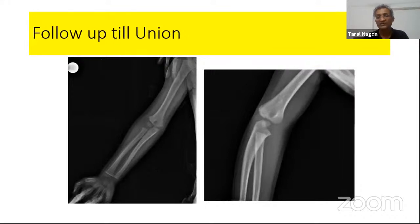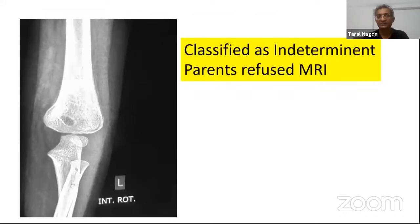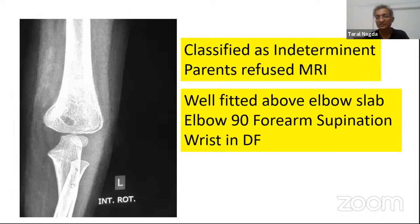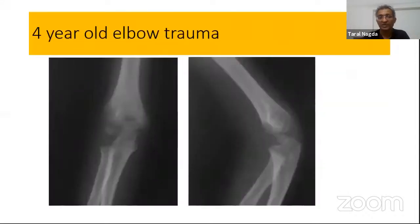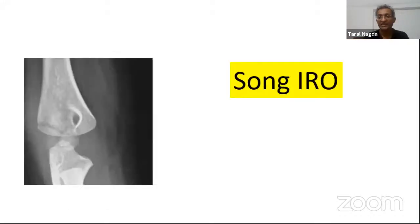This five-year-old with elbow injury was classified as indeterminate. We asked the parents for an MRI; they declined. We gave a trial of plaster. Taking out the plaster at one week for X-ray — AP, lateral, and oblique — showed no displacement, and in fact early callus was seen at one week. We said okay, continue conservative. At four weeks the X-ray showed good union.